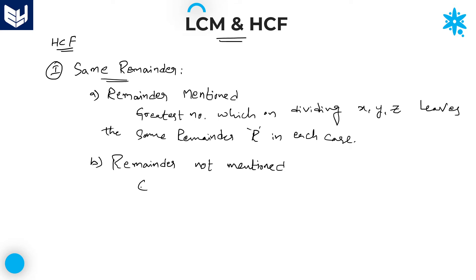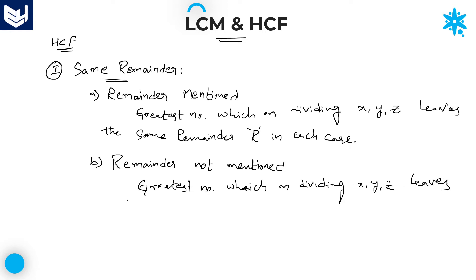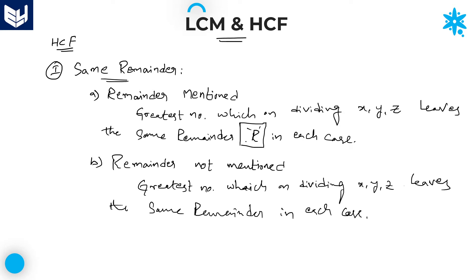Whereas in the second case, there is a small change. The question is: what is the greatest number which on dividing x, y, z leaves the same remainder in each case? In the previous sentence, same remainder and the remainder value are both given. But in this second case, remainder is not mentioned — he says same remainder, but we don't know the exact value.